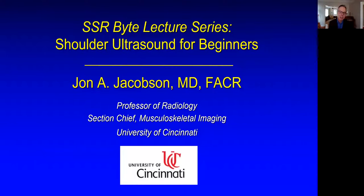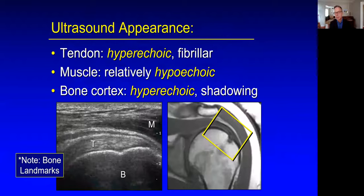Hi, my name is John Jacobson. This SR Byte lecture will be on Introduction to Shoulder Ultrasound. A few comments on what normal structures look like with ultrasound. Tendon is hyperechoic and fibrillar, as shown here listed as T, the supraspinatus tendon.